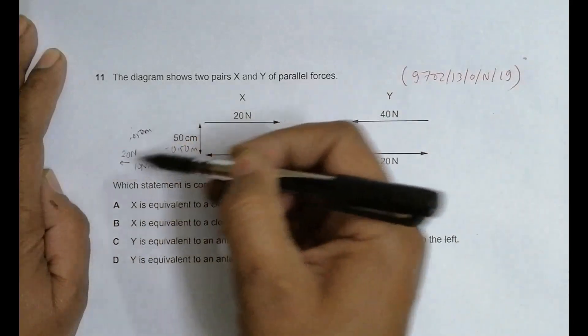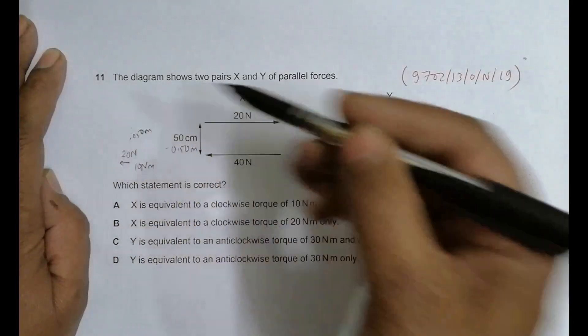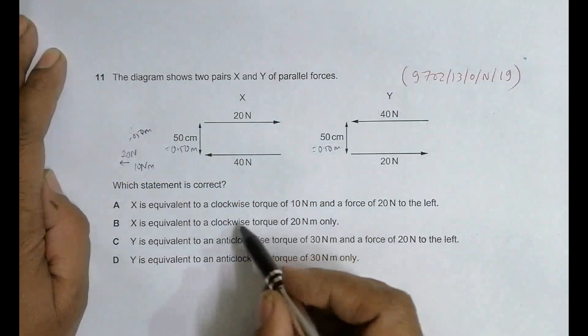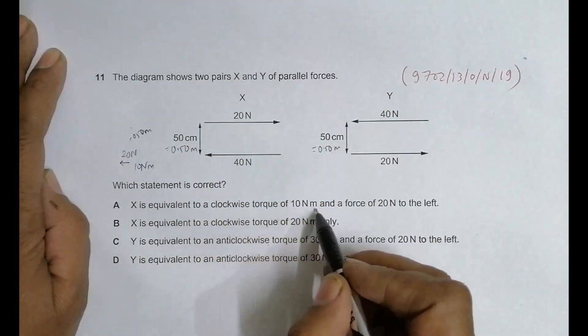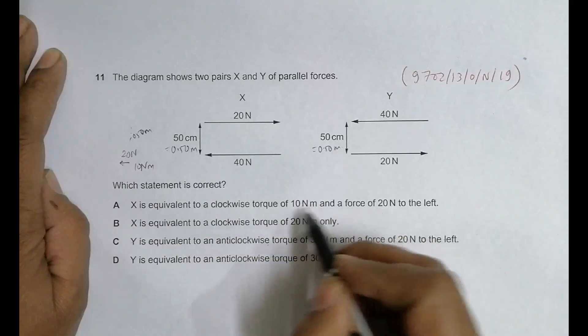This will move the body somewhat like this - it is clockwise. So this means it's equivalent to a clockwise torque of 10 Newton-meters, which is also correct. So the answer should be A.